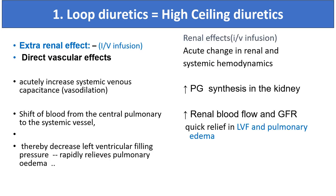Effects of loop diuretics include extra-renal and renal effects. On intravenous infusion, a direct vascular effect occurs: acute increased systemic venous capacitance causes vasodilation, shifting blood from the central pulmonary to systemic vessels, thereby decreasing left ventricular filling pressure and providing rapid relief from pulmonary edema. Renal effects of intravenous infusion include acute changes in renal and systemic hemodynamics, increased prostaglandin synthesis in the kidney, and increased renal blood flow and GFR, giving quick relief in left ventricular failure, pulmonary failure and pulmonary edema.